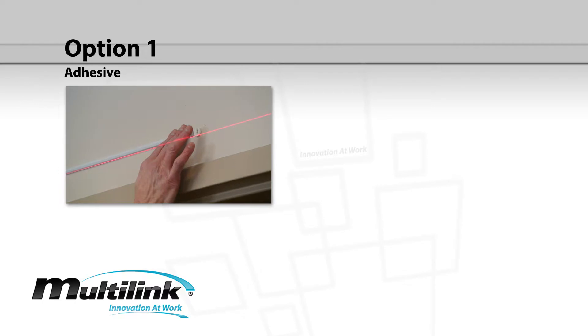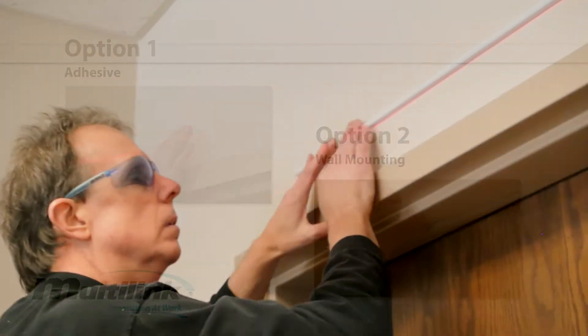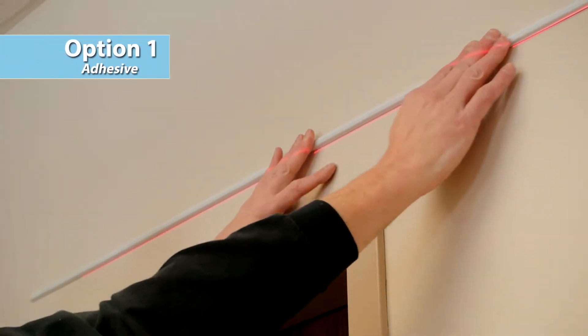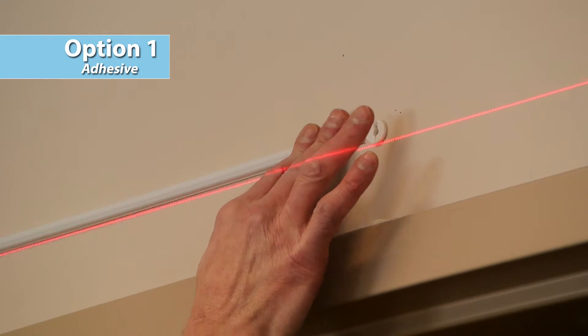Complete the next step with one of the following options. Option 1: Remove the adhesive backing and apply the micro molding to the wall following the alignment markings. Make sure the micro molding runs flush to the fiber feed plug.